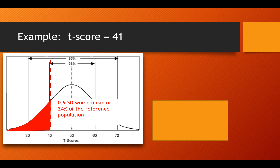Let's use physical function now relative to the US population. We could enter in a patient note that the patient is equal or better than 24% of people in the population if they had a score of 41.